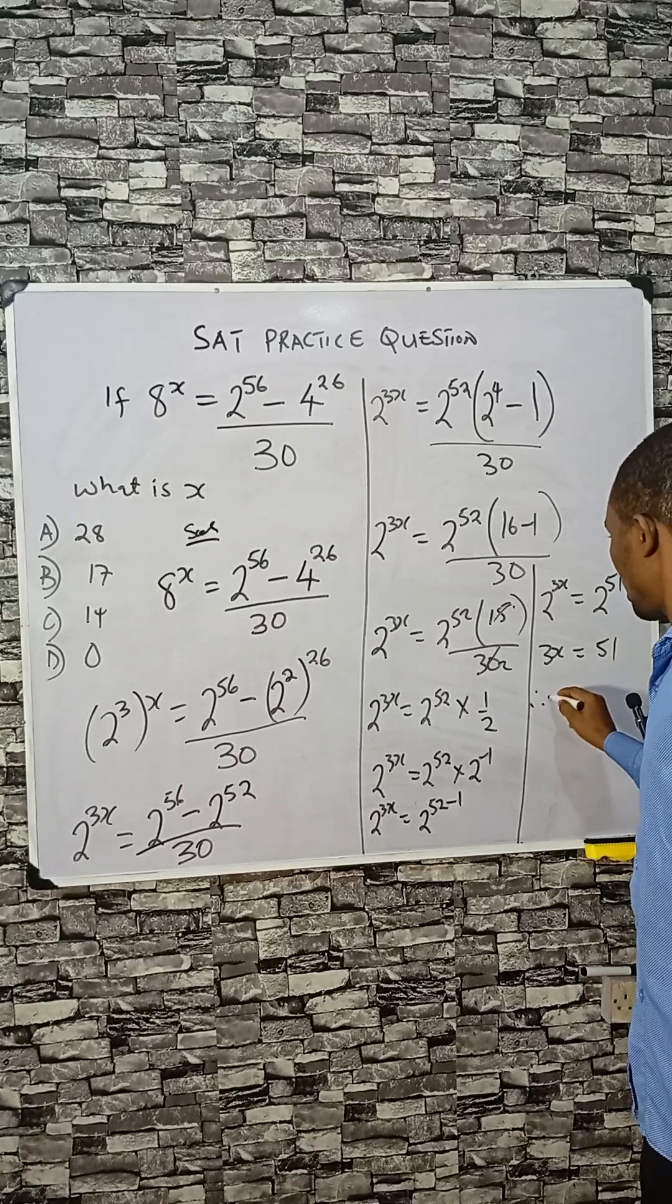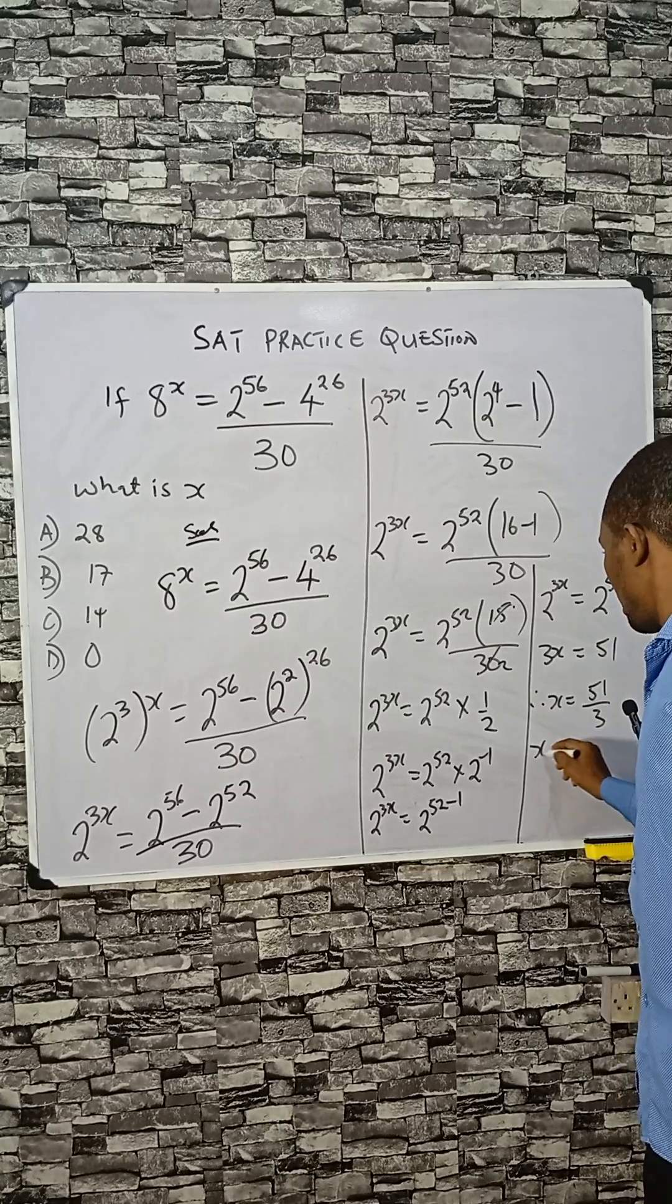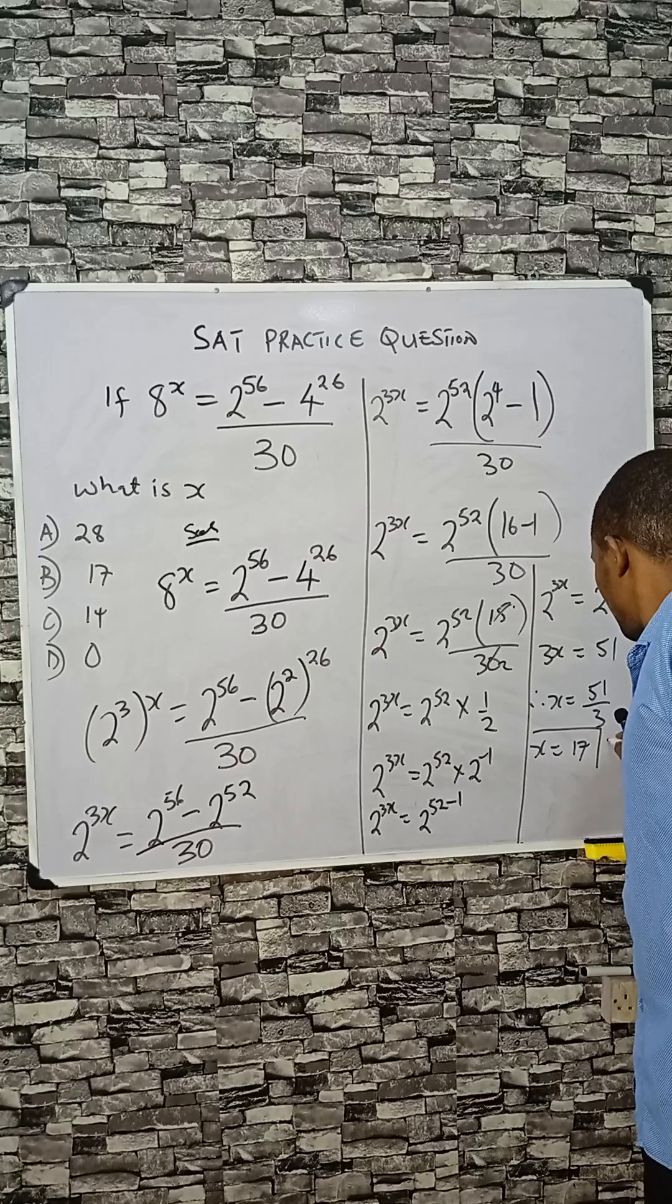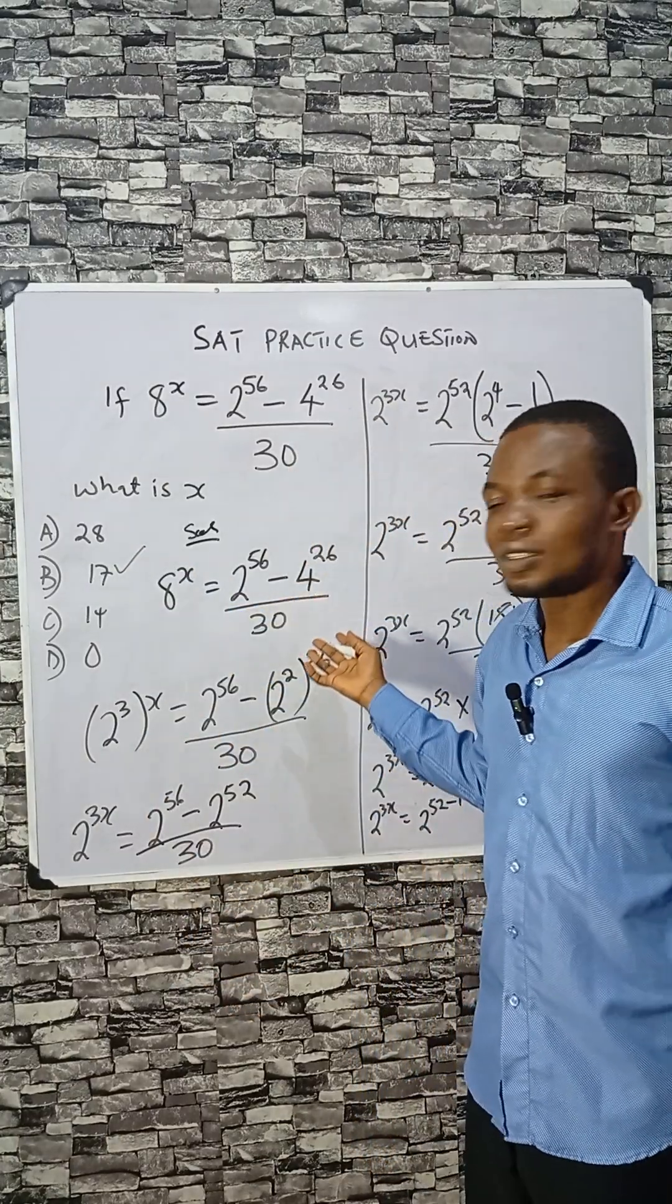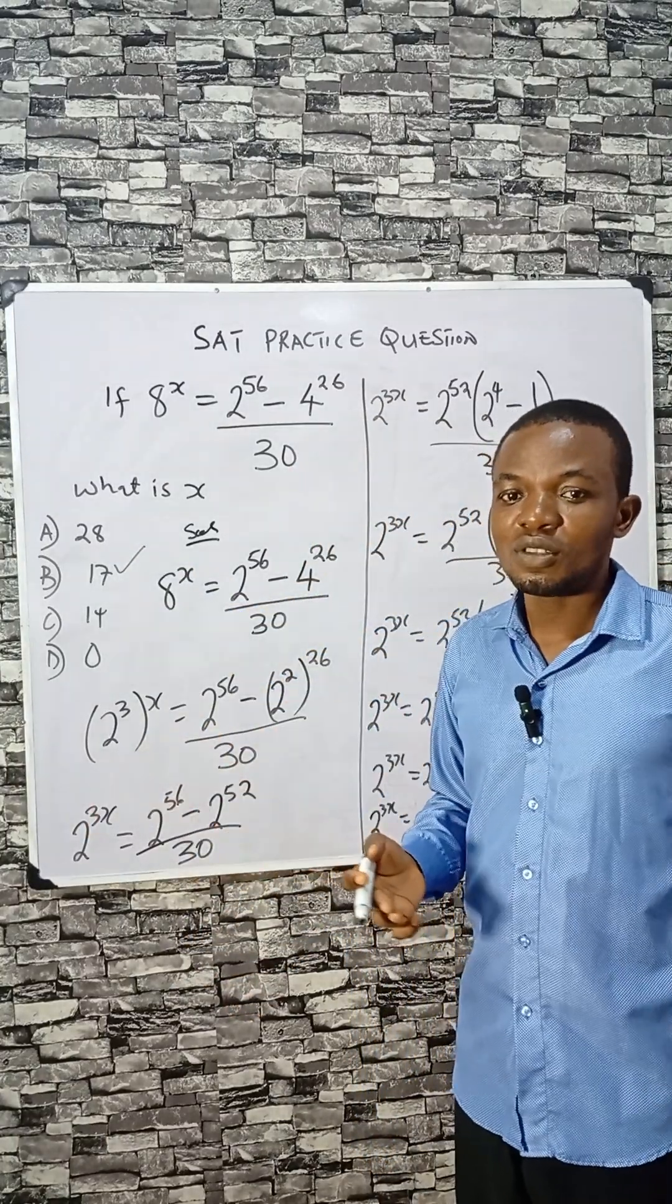So x equals 51 divided by 3, and it's what? 17. See closely, E is correct. Subscribe if this makes sense, and share to your friends for more of this. Bye bye!